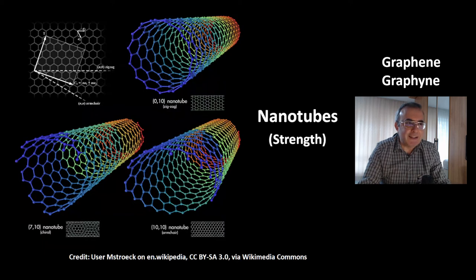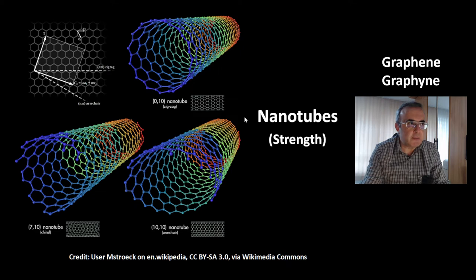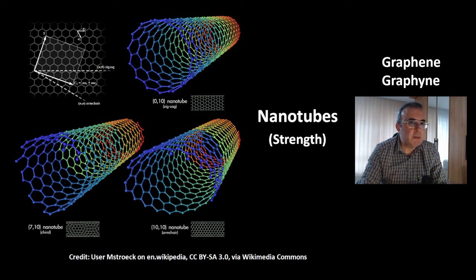This is another allotrope of carbon: nanotubes. There are several versions of it — this is the zigzag version, the armchair version, and the chiral version. And these compounds are known for their strength.